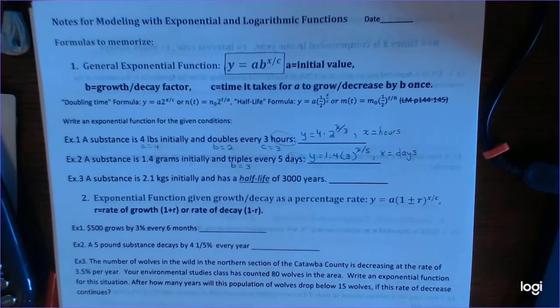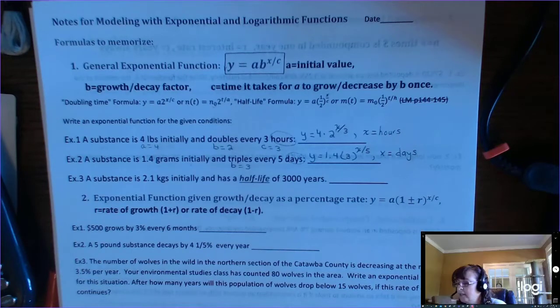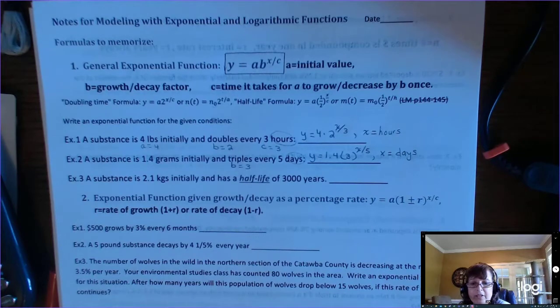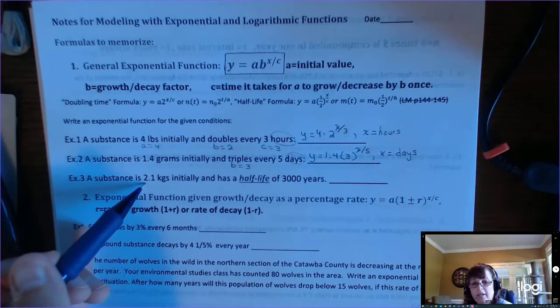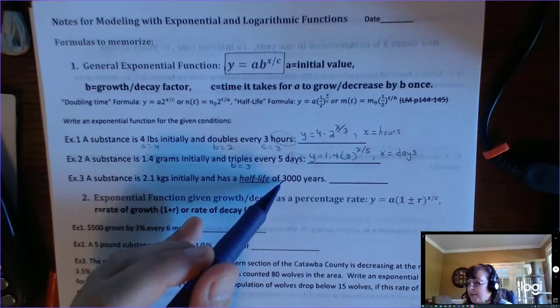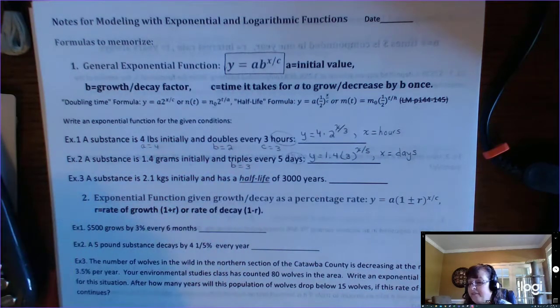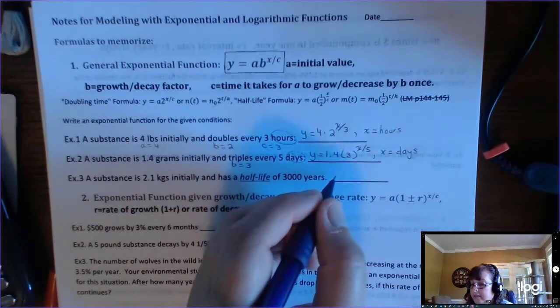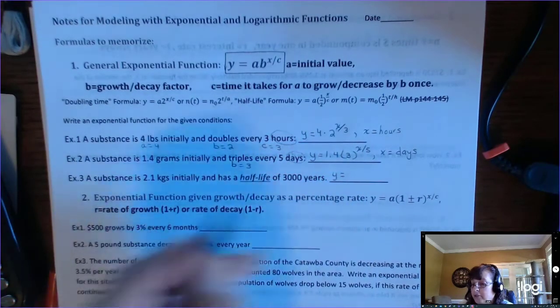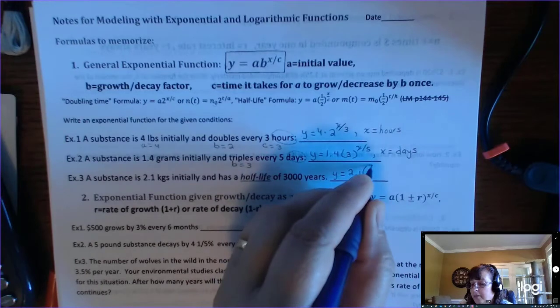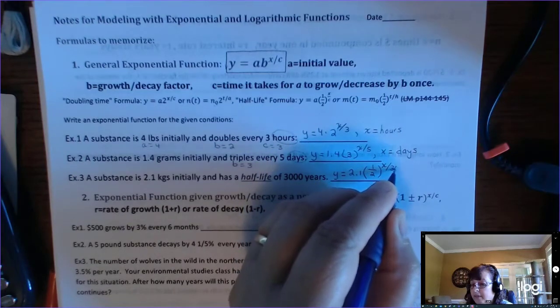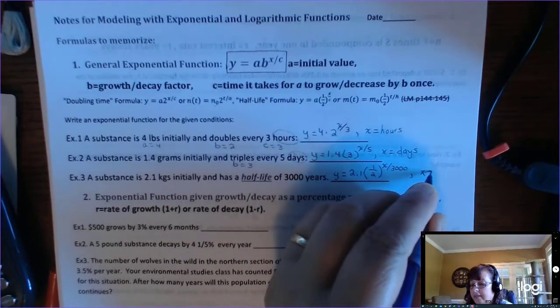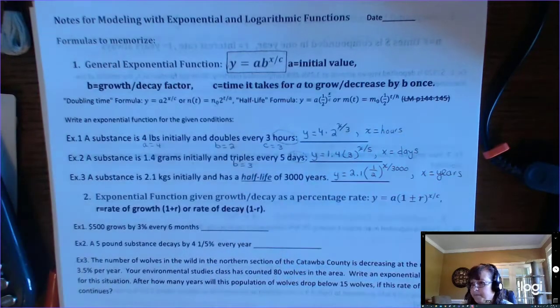Example 3, a substance is 2.1 kilograms initially, and it has a half-life of 3,000 years. So that means that this substance starts out at 2.1, and after 3,000 years have passed, at least half of it will be gone. So that means that this is a decay problem. So your output is going to equal your initial value, and you're going to be multiplying by 0.5, but you cannot multiply by 0.5 until 3,000 years have passed. So we have to divide out the 3,000, and then don't forget to tell people, X is in years.